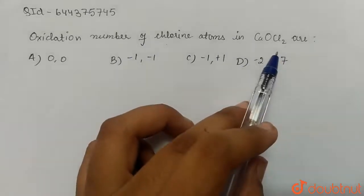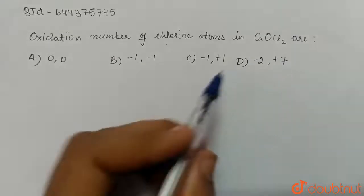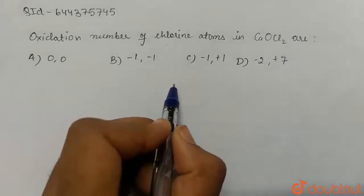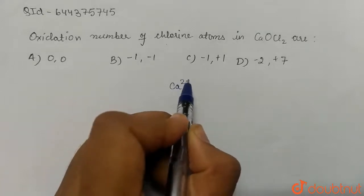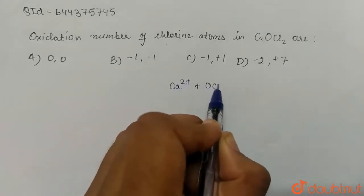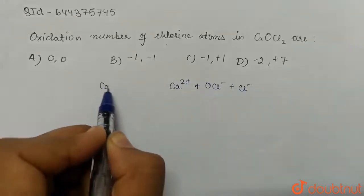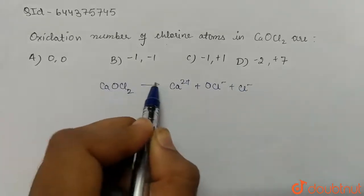CaOCl2 is an ionic compound and here we have ions like this: Ca2+, then we have OCl-, and then we have Cl-. So here if we dissociate CaOCl2 we will get Ca2+, then we have OCl-, and then we have Cl-.